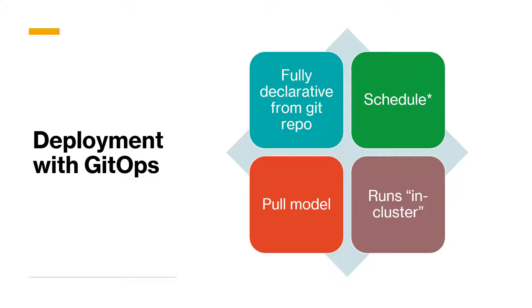That also means that if you make manual changes on your cluster, they will get overwritten within the schedule you set. It's also possible to work based on an event — for example, when the contents of your git repo change, you automatically and directly update your cluster. Compared to a traditional pipeline push model, where you have to configure external systems with credentials to your cluster, GitOps uses a pull model. The pull model is made possible by running software inside your cluster called a GitOps operator, which is given the necessary access rights using Kubernetes role-based access control.